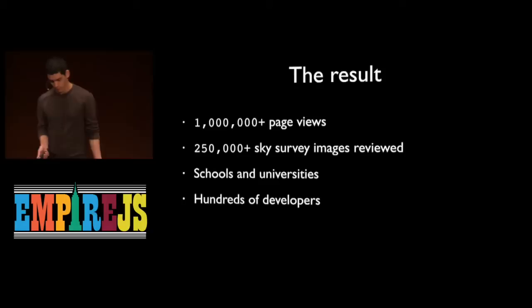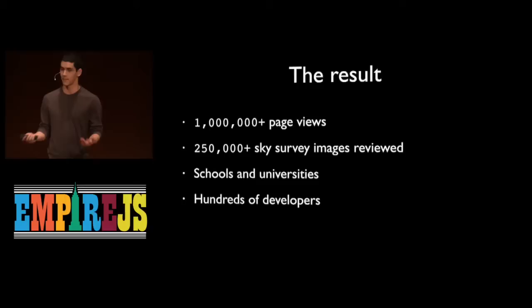Asterank is used in a bunch of different schools and universities. It's used by companies looking to raise money to go to space. There are hundreds of developers who follow or contribute to Asterank on GitHub — it's open source, all MIT-licensed, and it wouldn't be where it is today without contributions from a lot of enthusiastic people in the open source community.